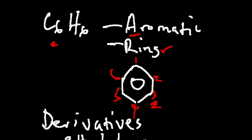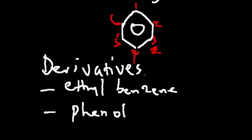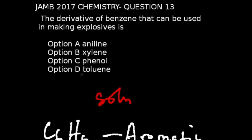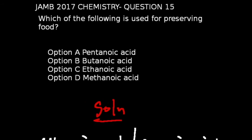Its derivatives are ethyl benzene and phenol. Phenol is a derivative of benzene that can be used in making explosives, so the correct answer to this question is option C, which is phenol.